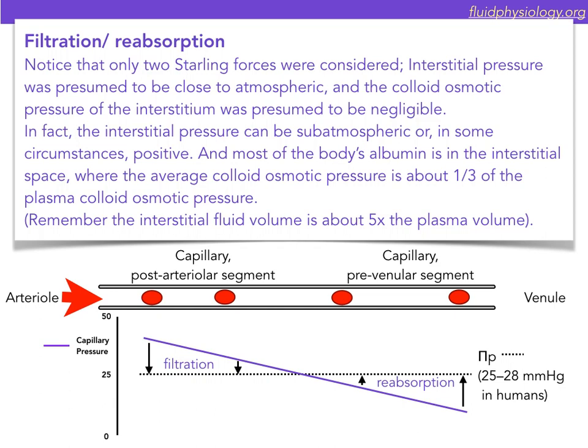The interstitial pressure was presumed to be negligible. In fact, the interstitial pressure can be sub-atmospheric or in some circumstances even positive. And most of the body's albumin is in the interstitial space, where the average colloid osmotic pressure is around one third of the plasma colloid osmotic pressure.